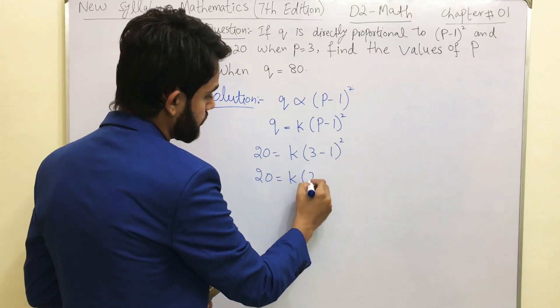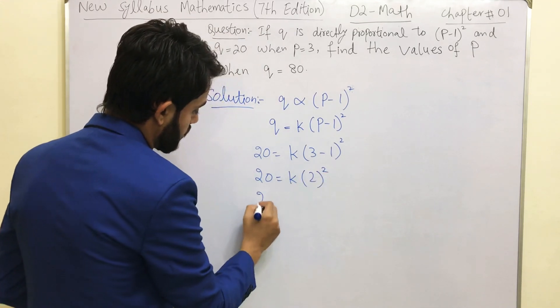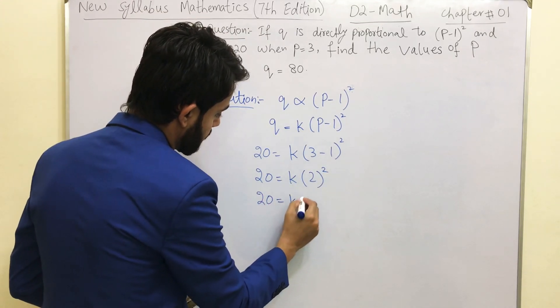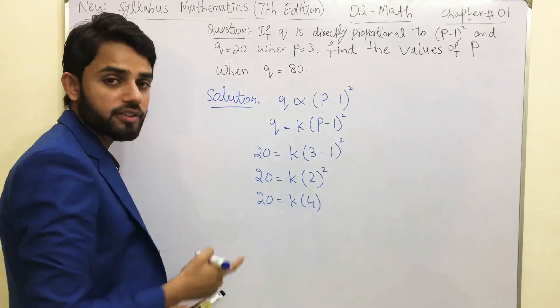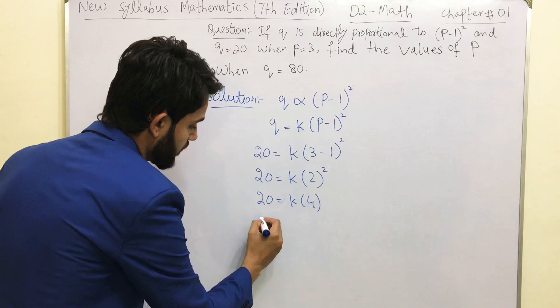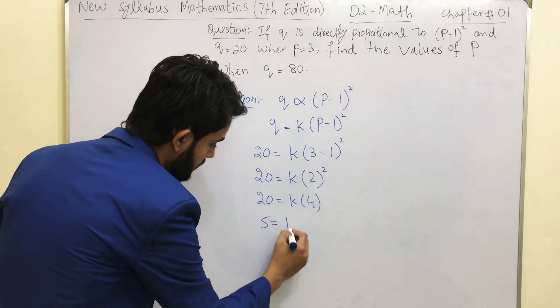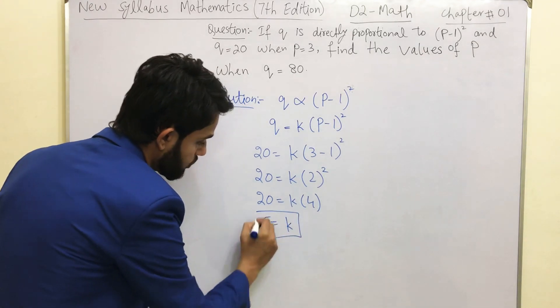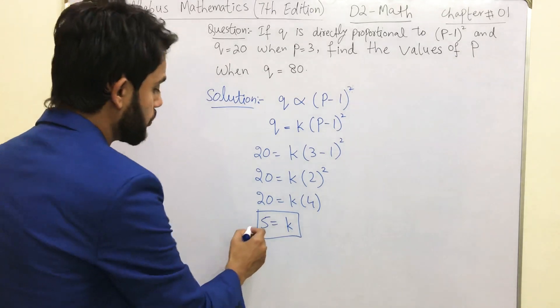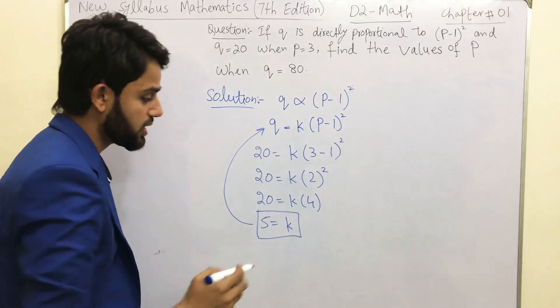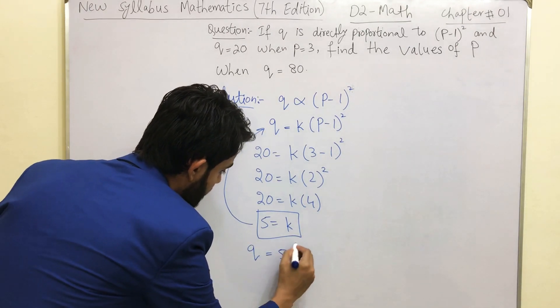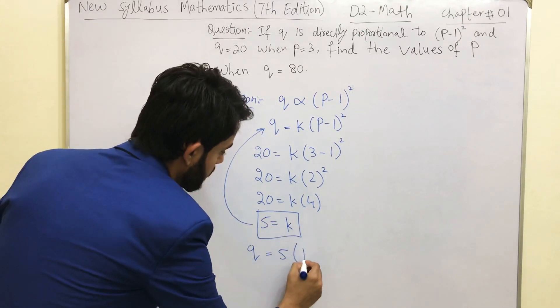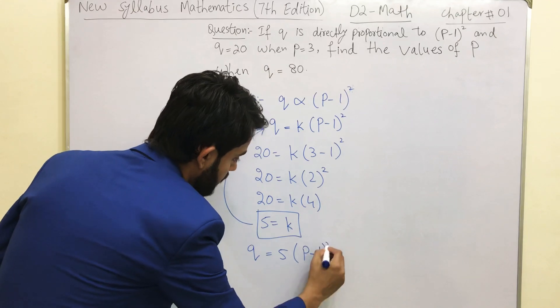3 minus 1 is 2. 2 squared is 4. So 20 = K(4). Now 20 over 4 is going to give you 5, so we have got the value of K which is K equals to 5. So we have to put this value of K back in this equation: Q = 5(P-1)².